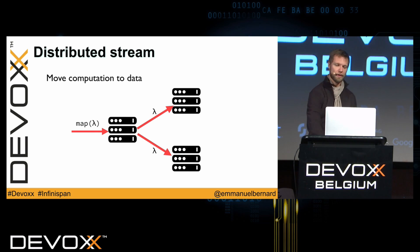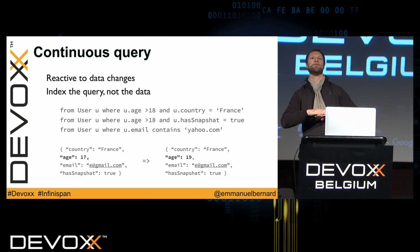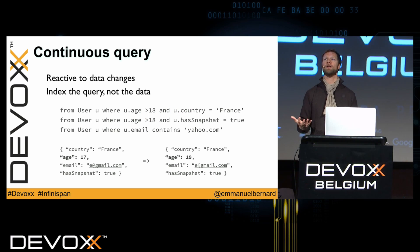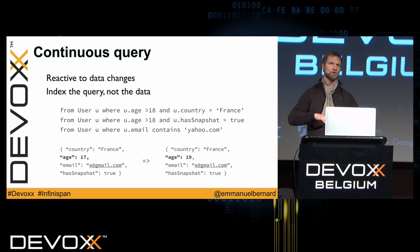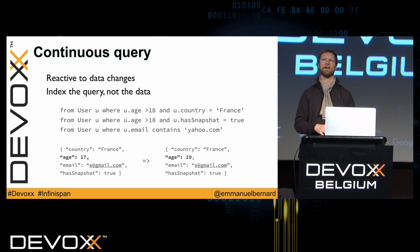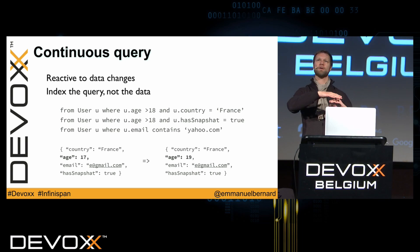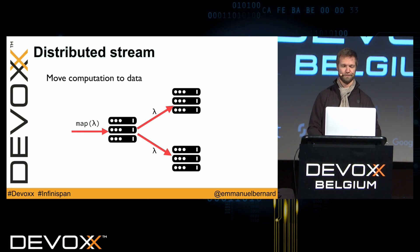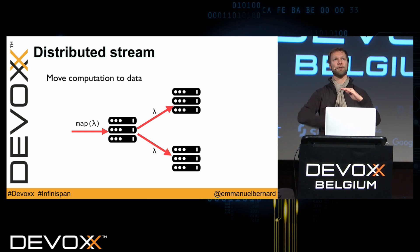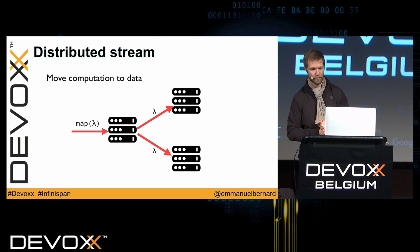Continuous queries are built on top of what we call the cluster listener — an event model that says: new entry coming in, update, delete, topology change, and so on. You can react to that and build a lot of things on top of it in plain Java. Continuous query is a higher-level abstraction that makes it easier to use. Distributed streams are also built on top of something I'll talk about next.